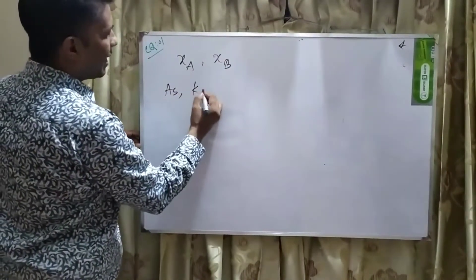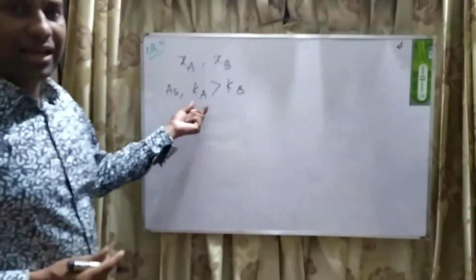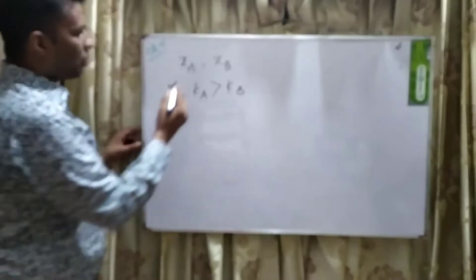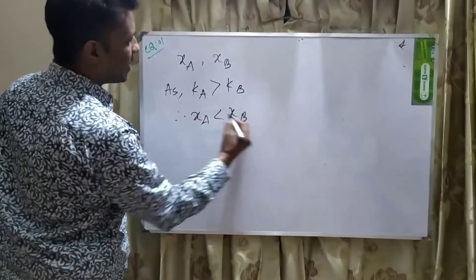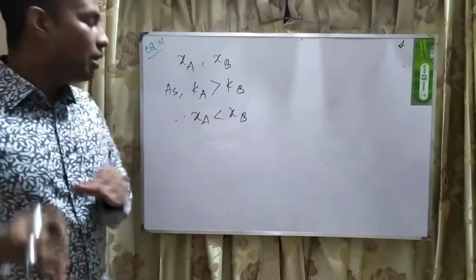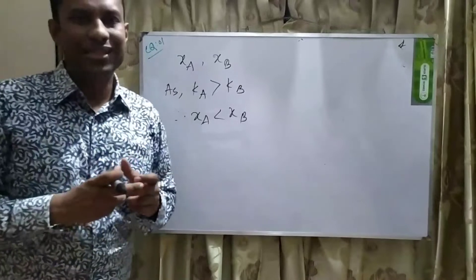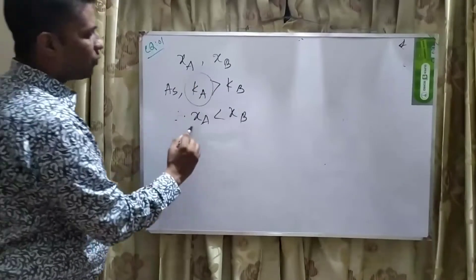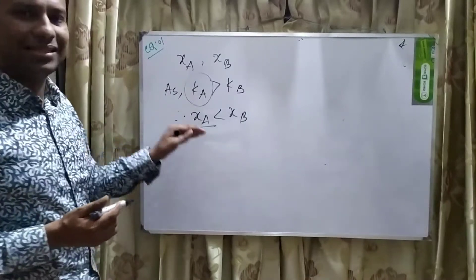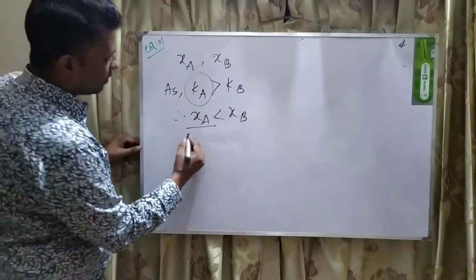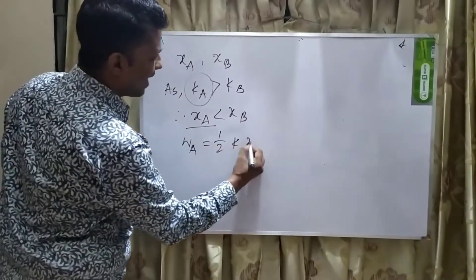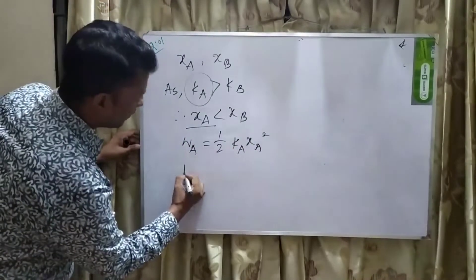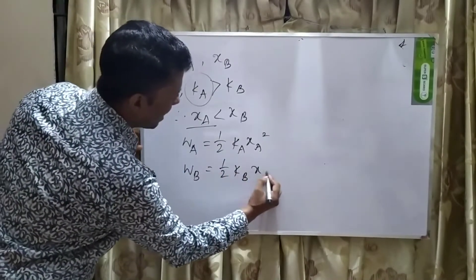As Ka is greater than Kb, the first spring has a greater spring constant. So we can write XA is less than XB — the spring with more spring constant will compress less. The work done for spring A is: WA equals half Ka times XA squared. For spring B: WB equals half Kb times XB squared.